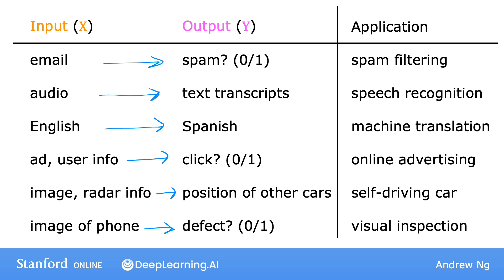In all of these applications, you would first train your model with examples of inputs x and the right answers — that is, the labels y. After the model has learned from these input-output, or x and y pairs, it can then take a brand new input x, something it's never seen before, and try to produce the appropriate corresponding output y.